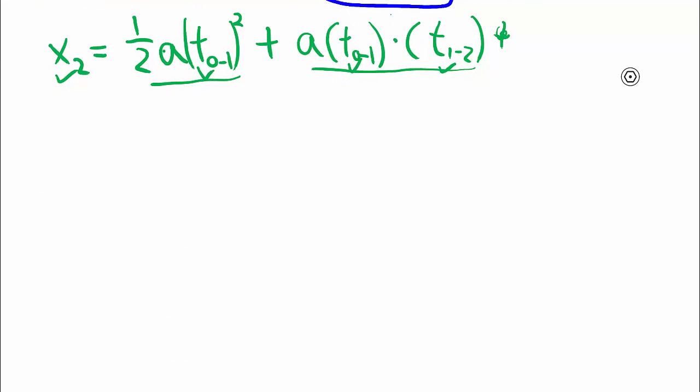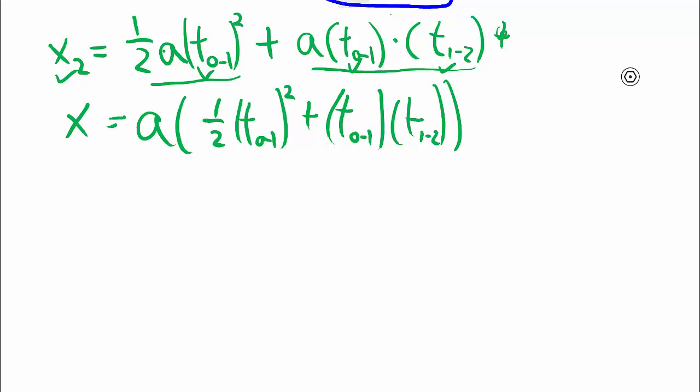In any case, we do some algebra now to isolate a. So we can factor out a and we're left with one-half t₀ to 1 all squared plus t₀ to 1 times t₁ to 2 equals x₂. So a equals x₂ over one-half t₀ to 1 all squared plus t₀ to 1 t₁ to 2.